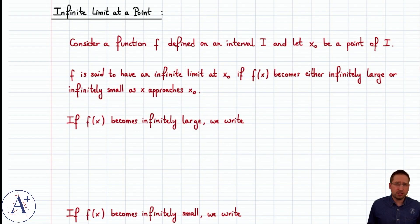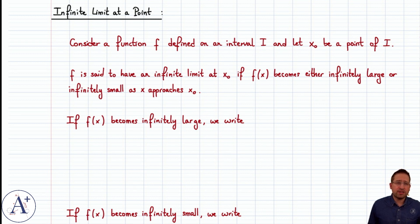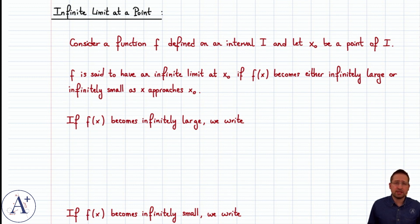When we defined the limit of a function at a point, we assumed that the limit was a finite limit, and we called it L. But that doesn't have to be the case. You could actually have an infinite limit at a point. If you have a function f defined on an interval I and x0 a point of I, you'll say that f has an infinite limit at x0 if f becomes either infinitely large or infinitely small as x approaches x0.